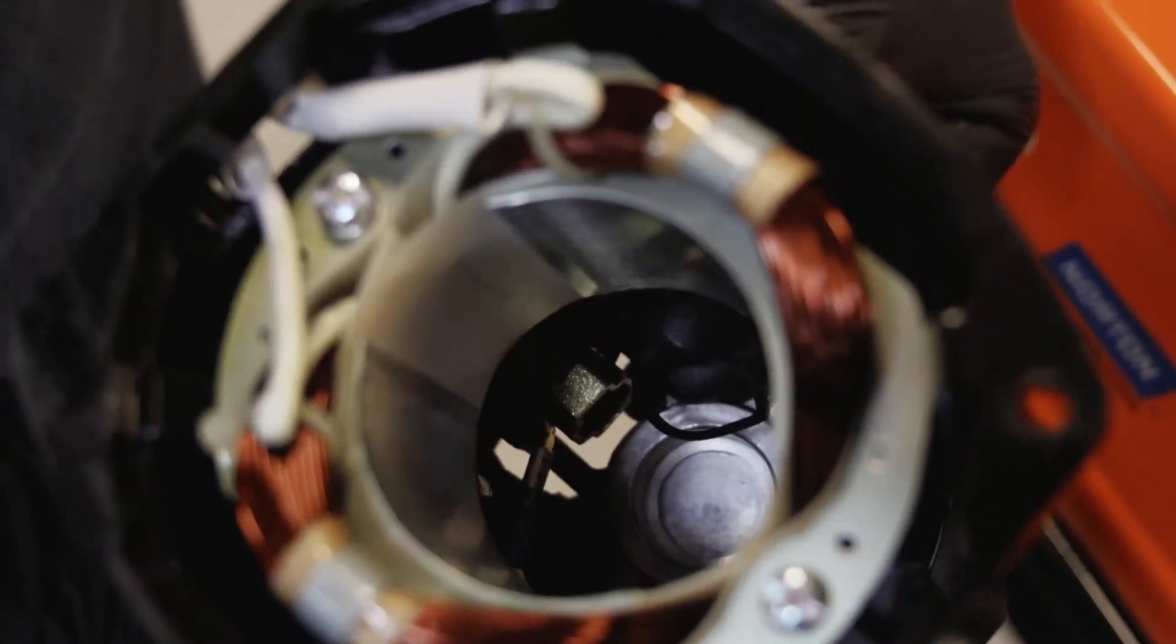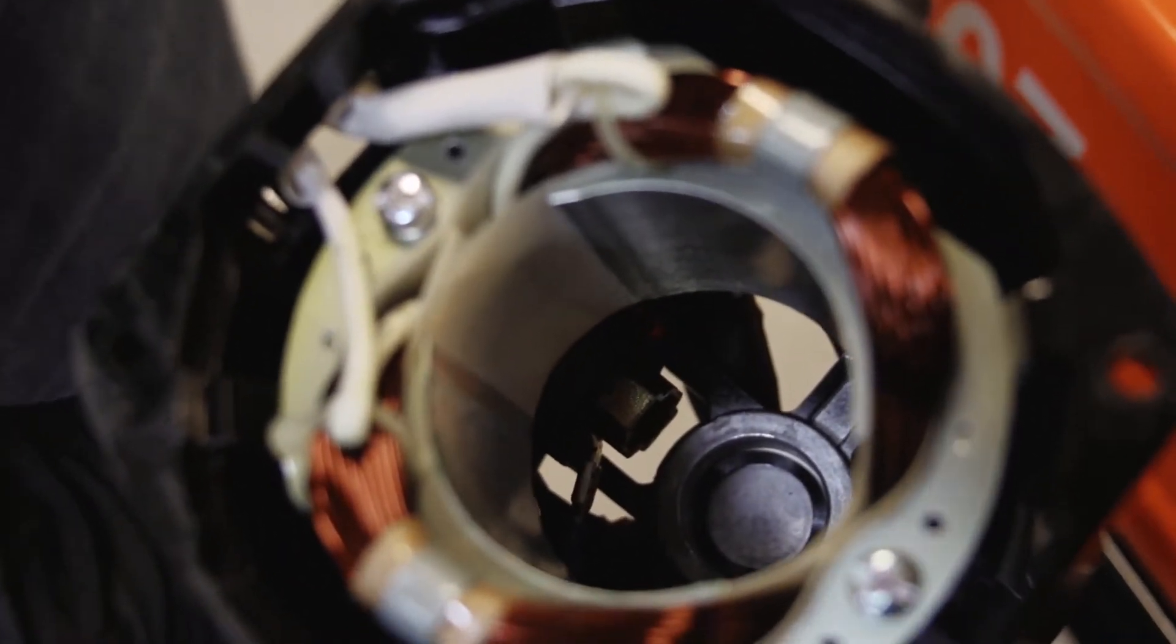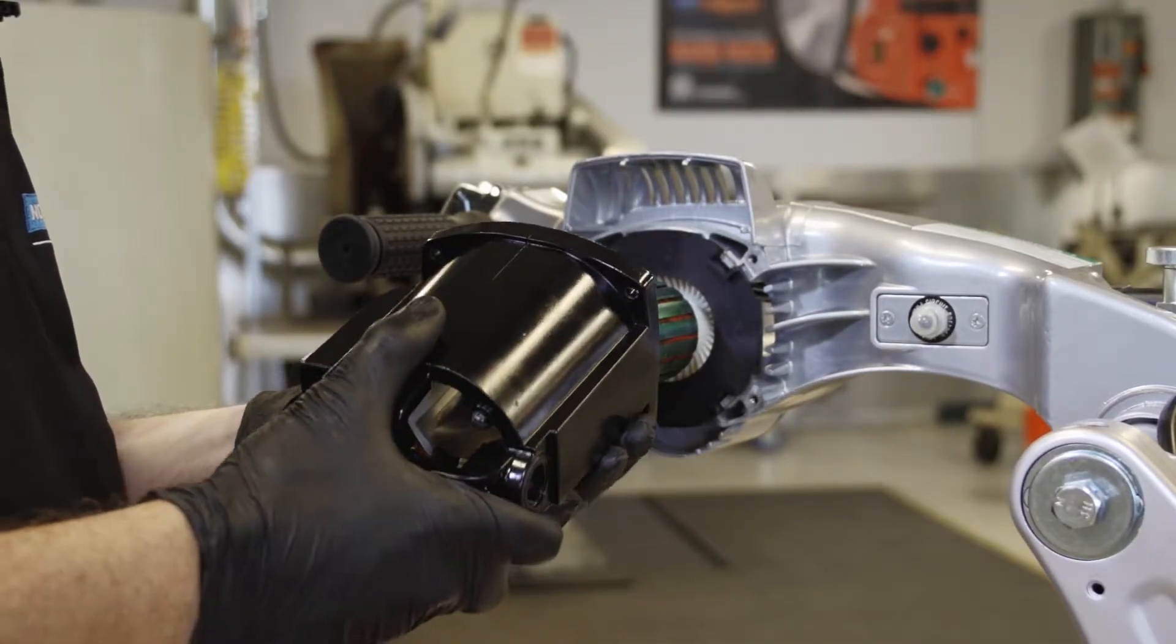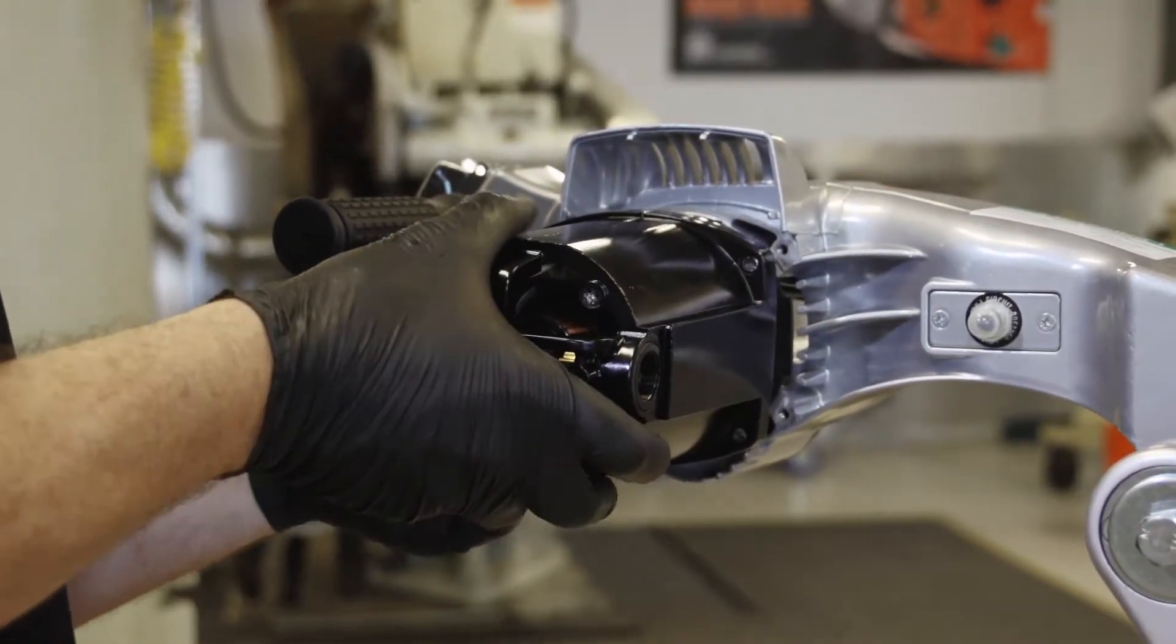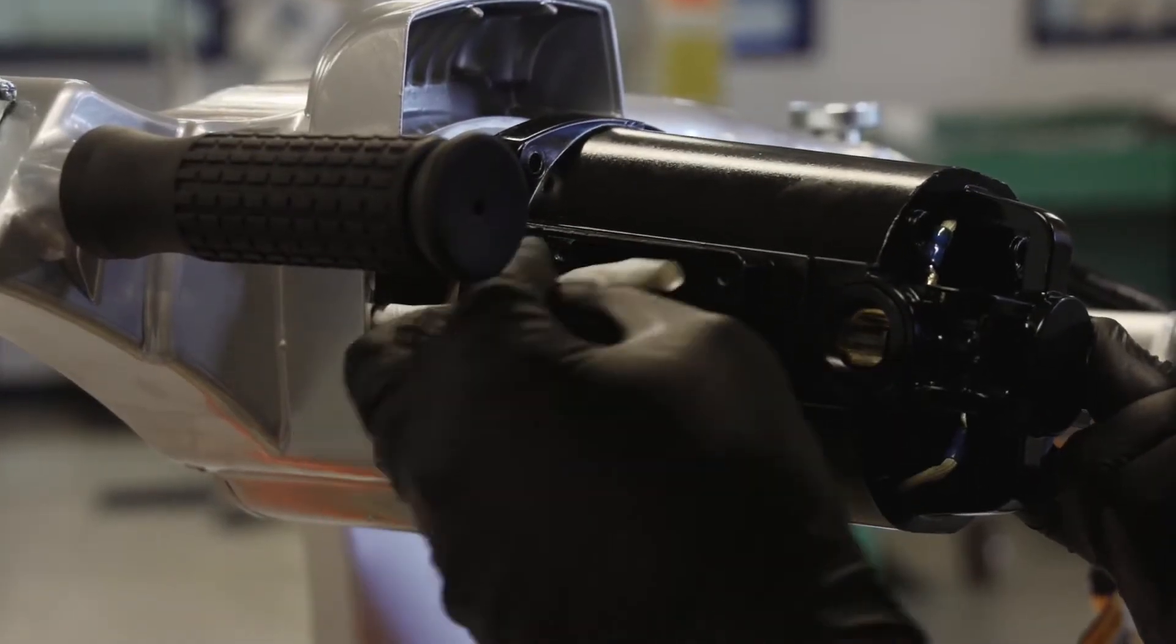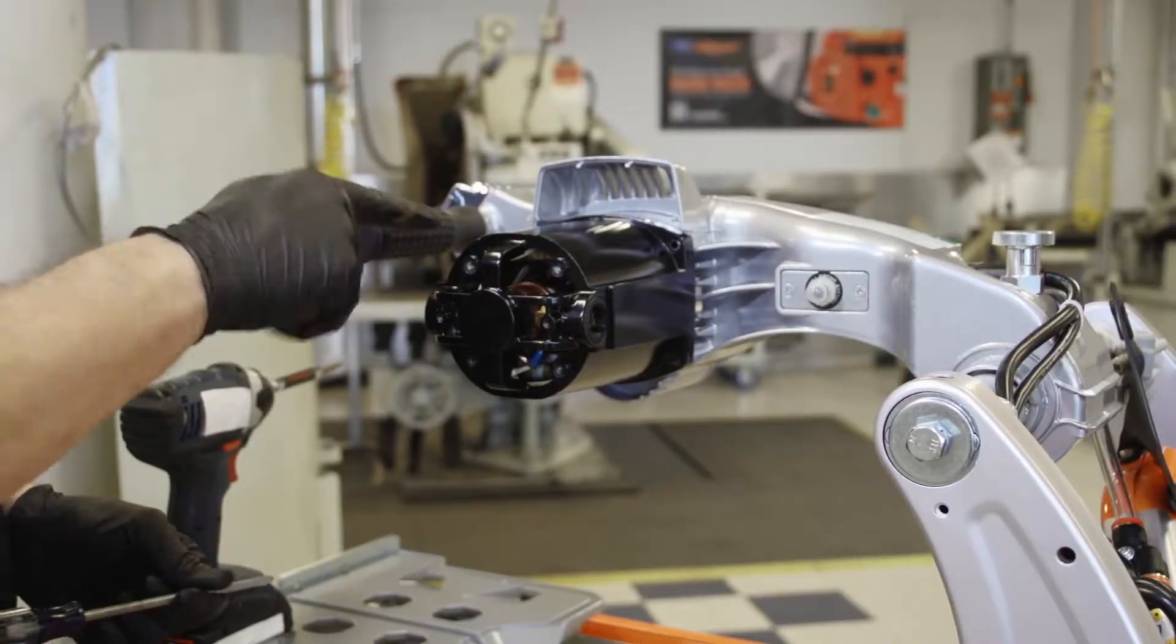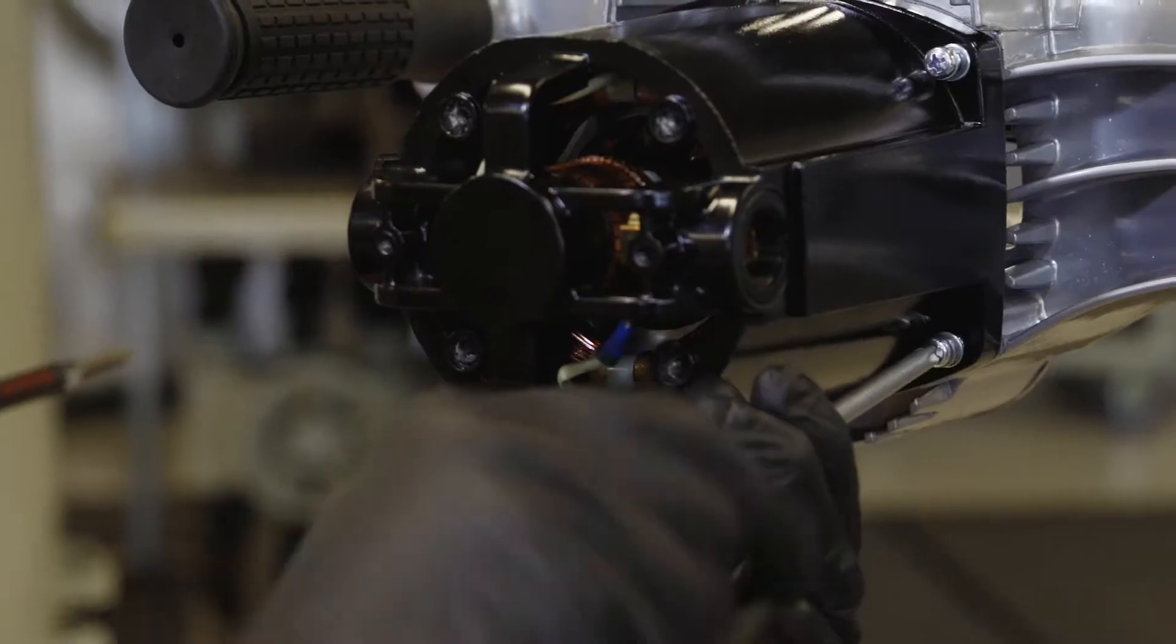Install the wave washer into the small bearing cavity located in the field winding housing. Now slide the field windings over the armature, making sure to feed the switch wires through the electrical opening. Install and tighten the four motor retaining screws.